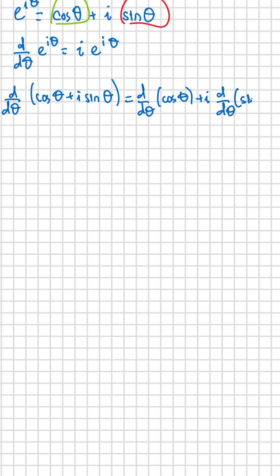Now, since the exponential of i theta is equal to cosine theta plus i sine theta, we substitute that back into the left-hand side.